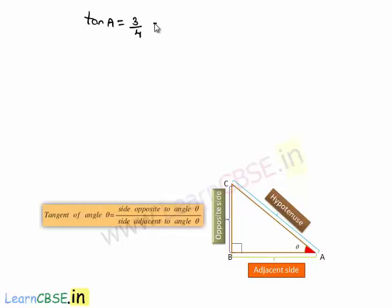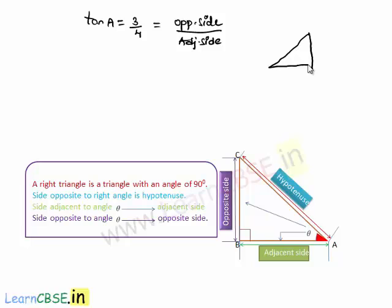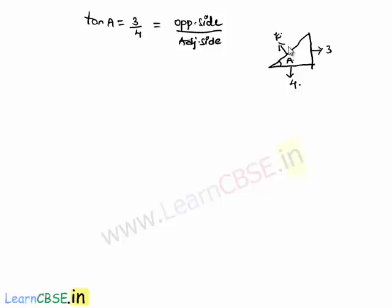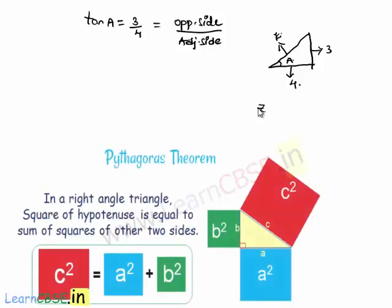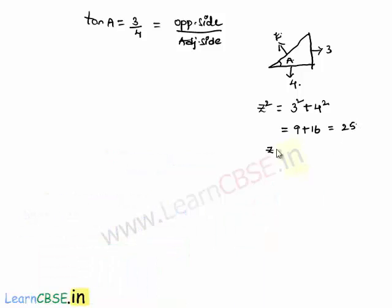Since tan a equals 3 by 4, that is opposite side by adjacent side, let us consider a right-angle triangle with base angle a. The opposite side is 3 and the adjacent side is 4. To find sin a and cos a we need the hypotenuse. By Pythagoras theorem, z square equals 3 square plus 4 square, which equals 9 plus 16, that is 25, giving z equals 5.